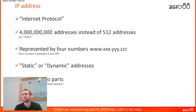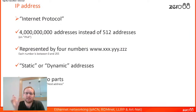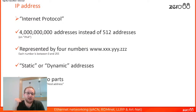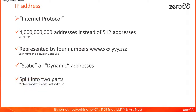An IP address is represented by four numbers — for example 192.168.5.10 — where each number can be between 0 and 255. You get static IP addresses where you manually set the address on the device, and dynamic IP addresses which we'll cover shortly. The IP address is split into two parts: the network address and the host address, and that split is done using a subnet mask.